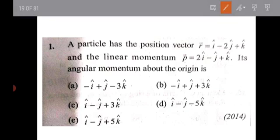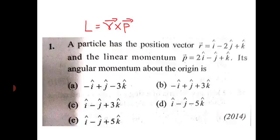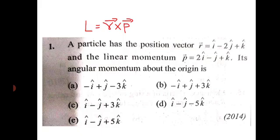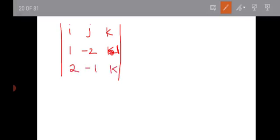Angular momentum L is equal to R cross P. Computing the cross product R × P using the determinant with vectors I, J, K.